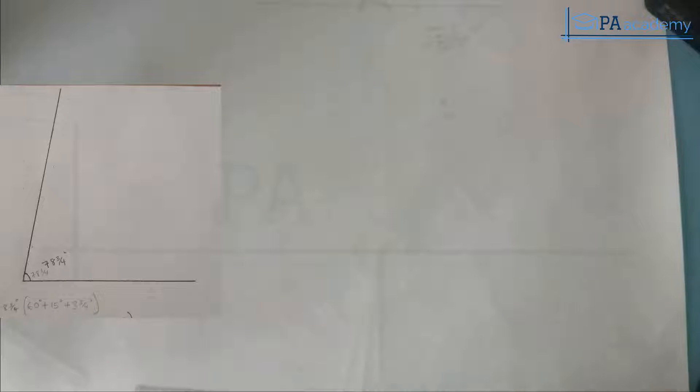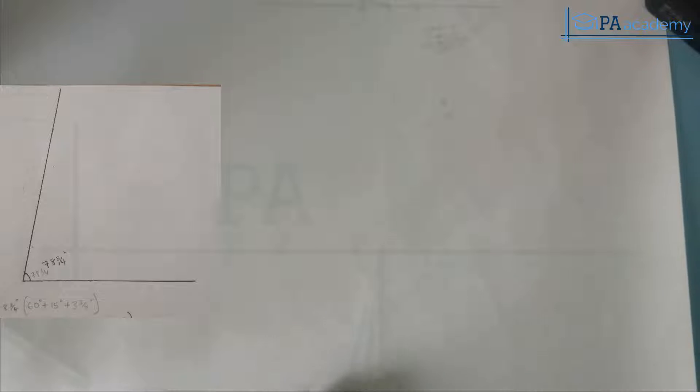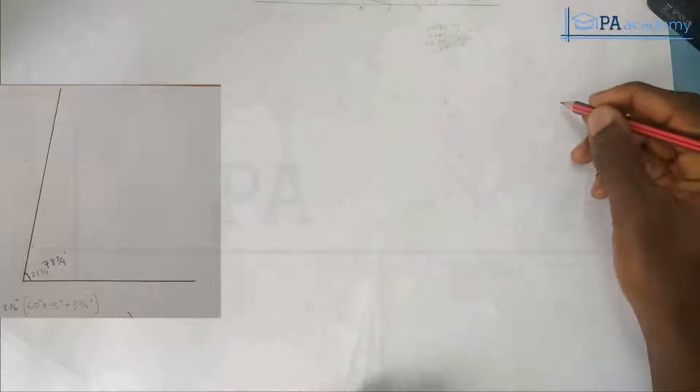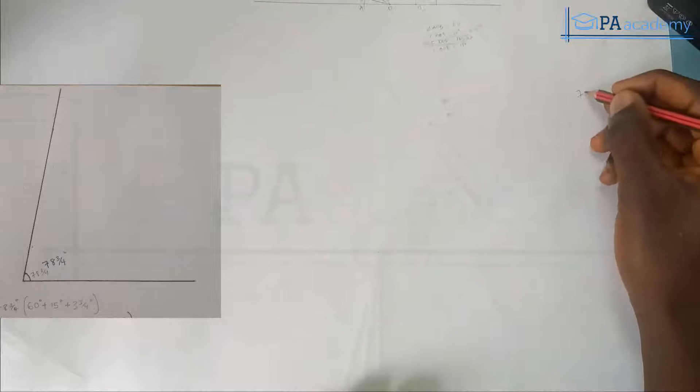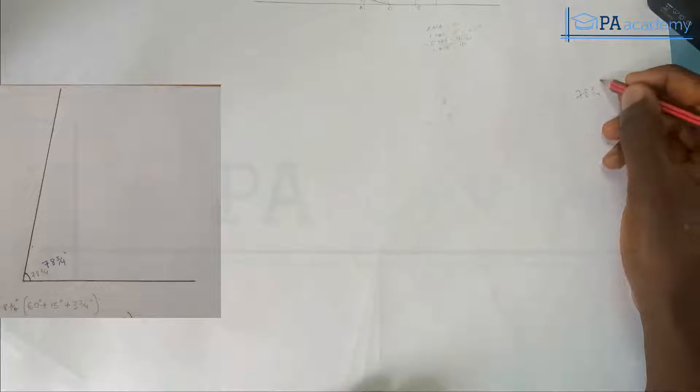Welcome to PA Academy. In this video I'm going to be showing you how to construct angle 78 three-quarter degrees. We are going to be doing it by means of construction — that means you are not going to be needing a protractor. The only time you might need to bring in your protractor is probably when you want to confirm your answer.